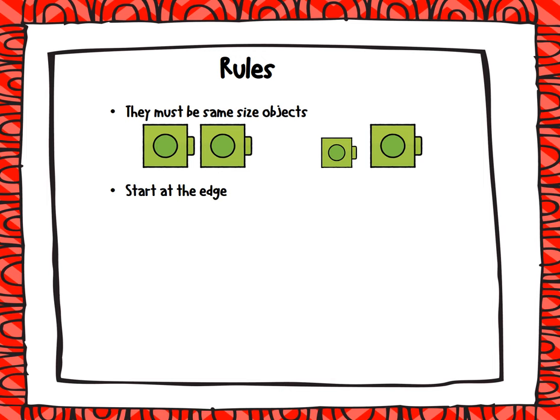Our next rule is that it has to start at the edge. So if you're going to measure this book, for example, then the object that you're going to use, like the little teddy bear, it has to start at the edge. So we're going to start at the very bottom of the book. That's where it needs to start at the edge.